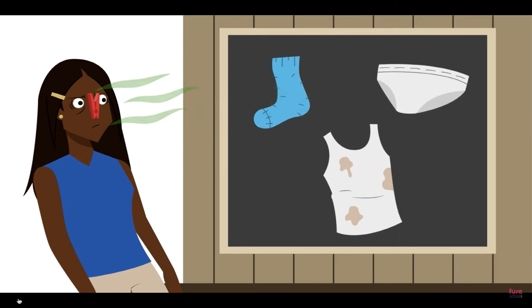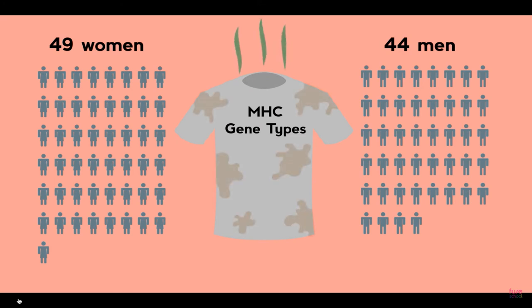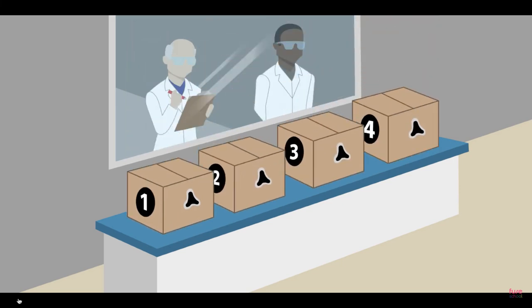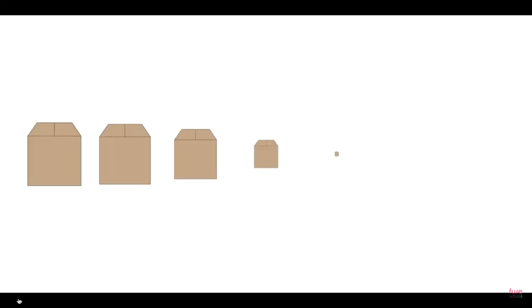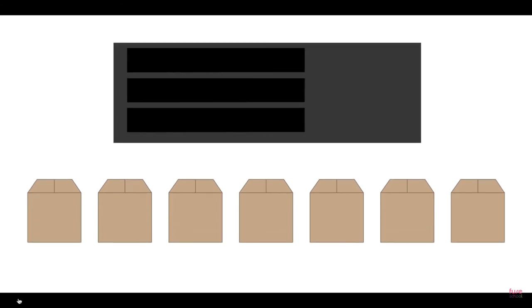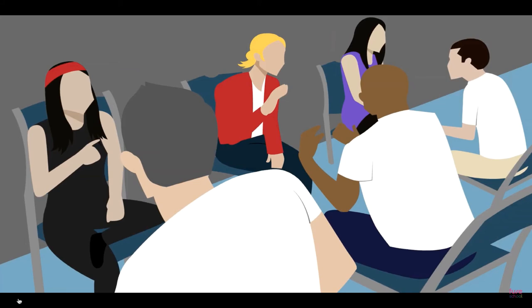The scientists set out to test heterosexual women's sensitivity to male odors. The study involved 49 women and 44 men, all selected for their variety of MHC gene types. Men were given clean t-shirts to wear for two nights and then returned them to the scientists. Each t-shirt was placed in a box equipped with a smelling hole, and women volunteers were invited to sniff the boxes. The women had to sample the odor of seven boxes and describe each one.